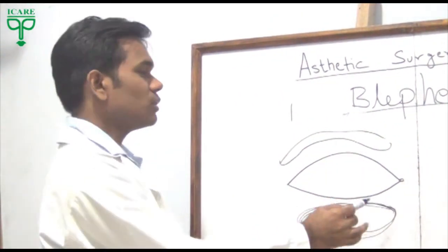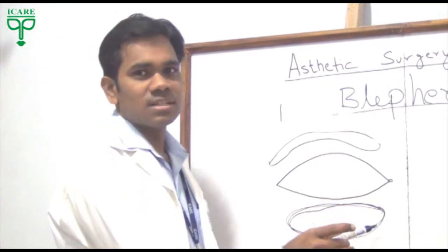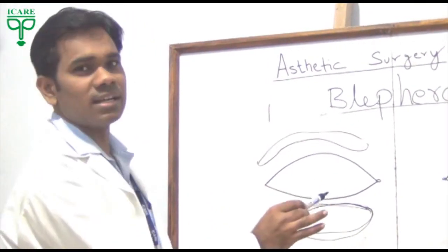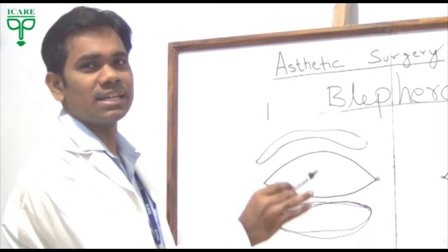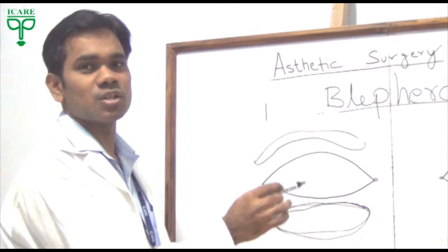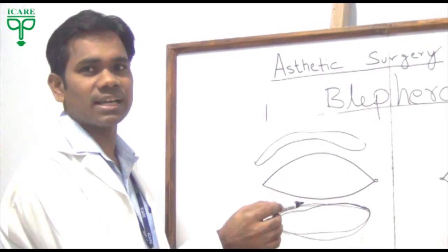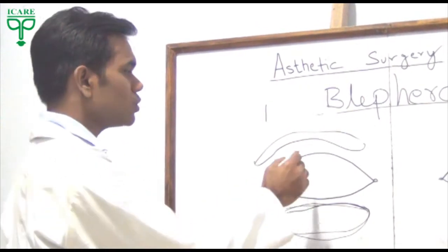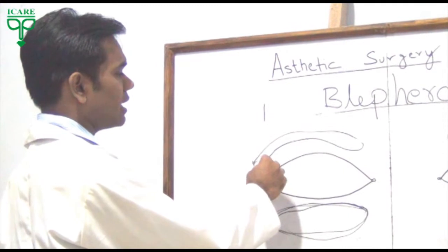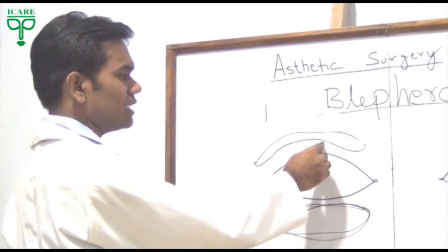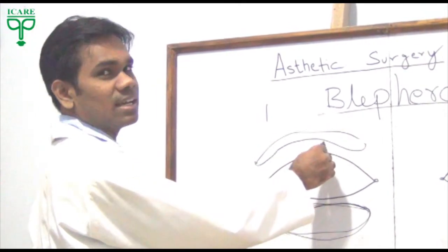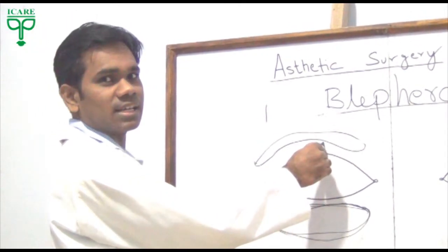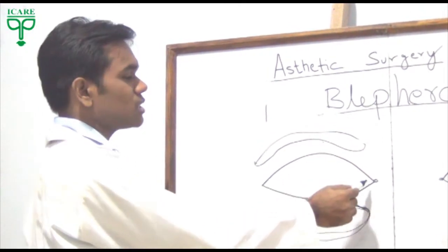There are two types: cosmetic, where we have no complaint from the patient but want an aesthetic look — a cosmetic look to improve the quality of the appearance. So in that case, we address the ptotic skin, the excessive skin, and treat the area in front of the eye.